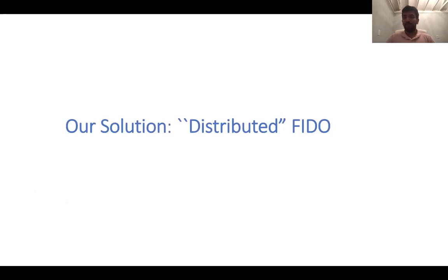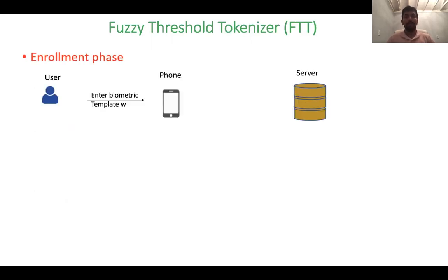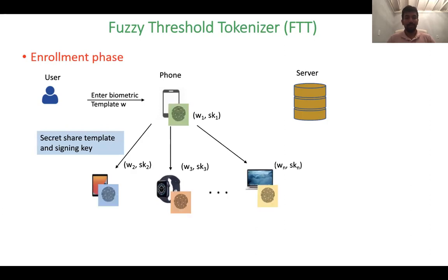Our solution to address this problem is to propose the notion of — you can think of it as distributed FIDO. We propose this new primitive called a fuzzy threshold tokenizer, which works as follows. We have an enrollment phase as before. But now, in the enrollment phase, when the user enters their biometric template onto the phone, the phone no longer stores the biometric template entirely in the clear. Instead, we think of several more devices that the user owns, and the phone secret shares its template with all these devices. Similarly, the signing key is also secret shared between all these devices.